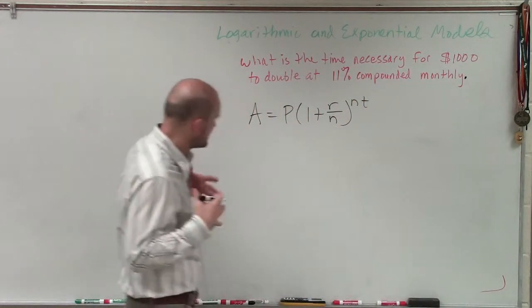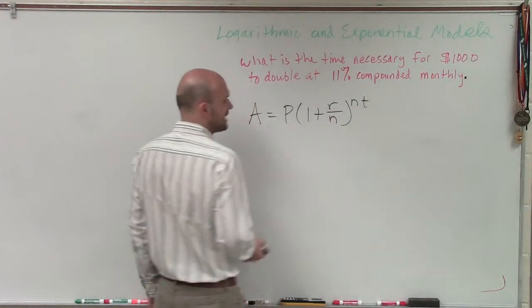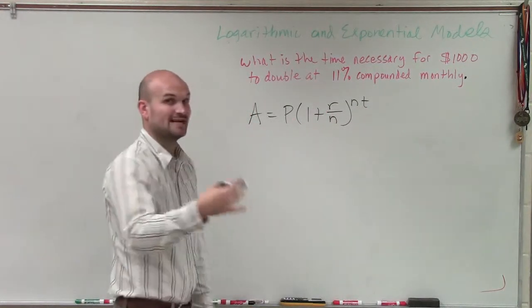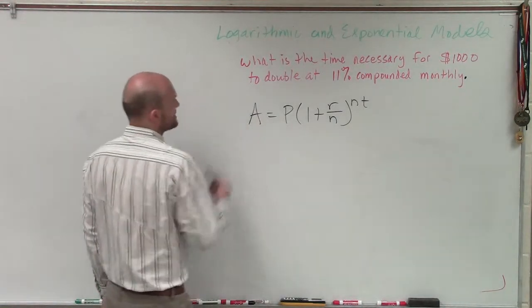So it says something is going to be compounded monthly. So therefore, remember, n represents how many times we compound something, r is our annual interest rate in decimal form, P is our initial amount, and A is going to be our final amount.